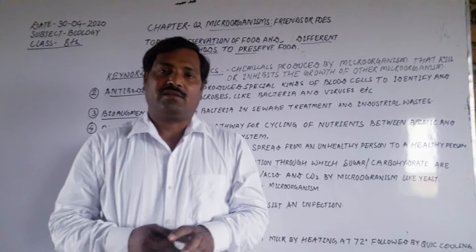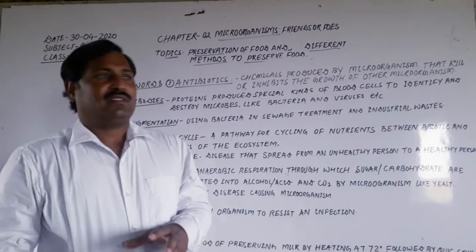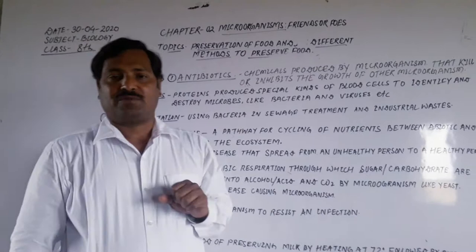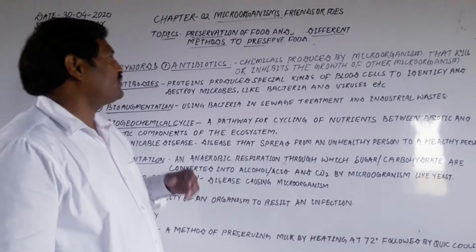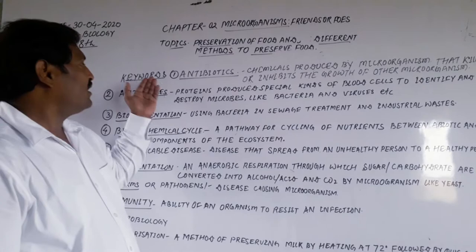Good morning students, today again you are welcome in this online class. The chapter number is 2, and the name of the chapter is 'Microorganism: Friends and Foes.' Yesterday we discussed the preservation of food and different methods to preserve food — the process of preservation and about 10 or 11 points related to that.